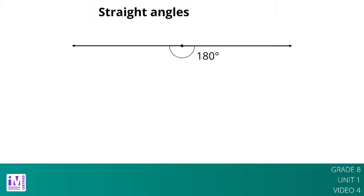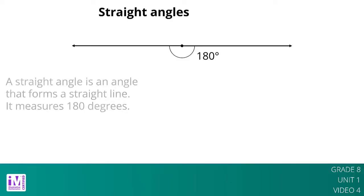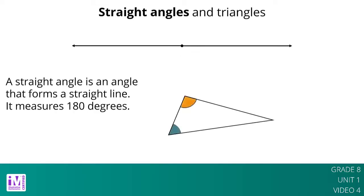A 180-degree angle is called a straight angle because when it's made with two rays, they point in opposite directions and form a straight line. If we experiment with angles in a triangle, we find that the sum of the measures of the three angles in each triangle is 180 degrees. This is the same as a straight angle.